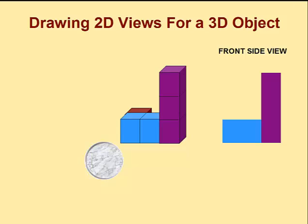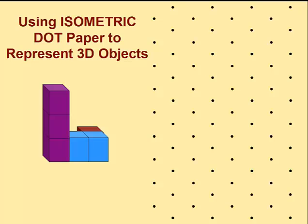It's amazing how they can all look so different and yet come from the same thing. Let's take this three-dimensional object and show you how to draw it on isometric dot paper.